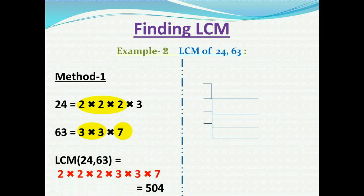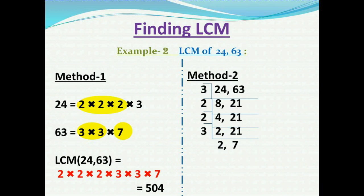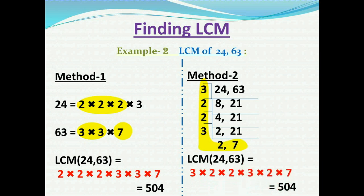Taking the product of all prime factors at their maximum repetitions gives the LCM of 24 and 63, which is 504. Using the second method — repeated division — on the same example, we divide 24 and 63 repeatedly by their prime factors as shown, then multiply all the prime divisors: 3 × 2 × 2 × 3 × 2 × 7 = 504. The same answer is obtained.